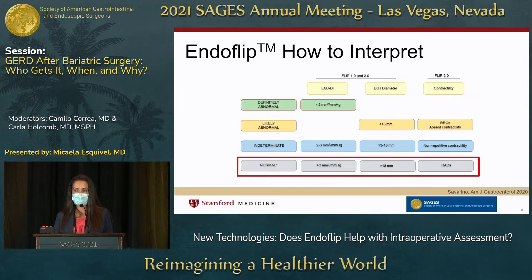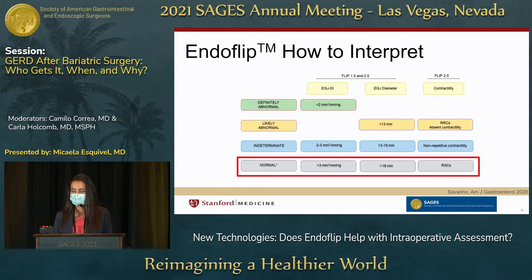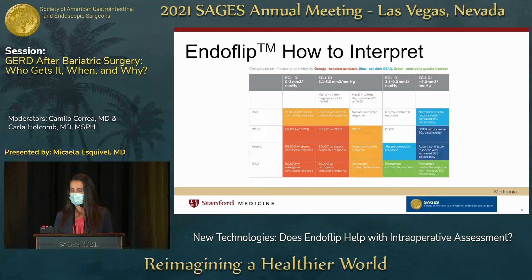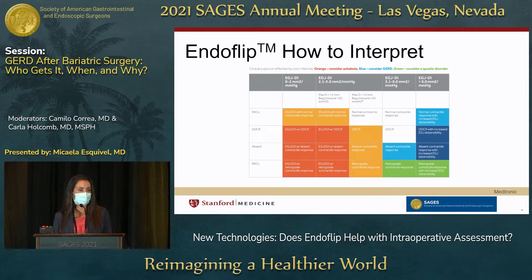How do we interpret the numbers and put them into action? Looking at the normal column for the EG junction, a distensibility index of over 3 — and 2.8 in some studies — is considered normal, while a diameter of over 18 millimeters is also considered normal. When looking at motility, we'd anticipate repetitive antegrade contractions. Using distensibility, diameter, and motility together, you can start hypothesizing and even diagnosing patients just with Endoflip.